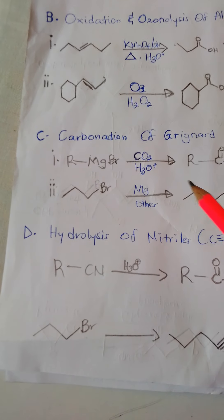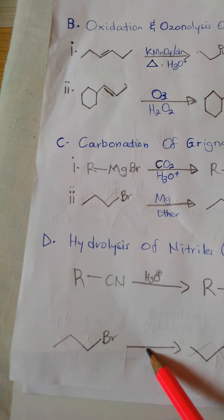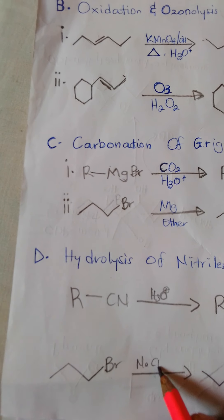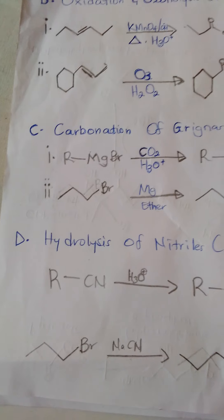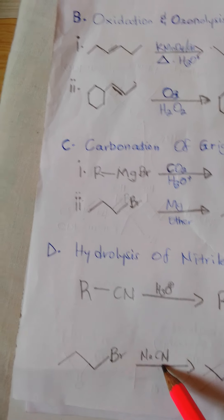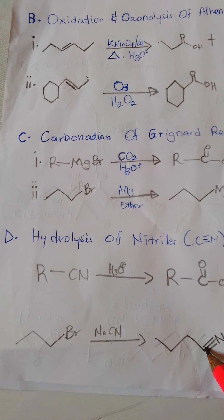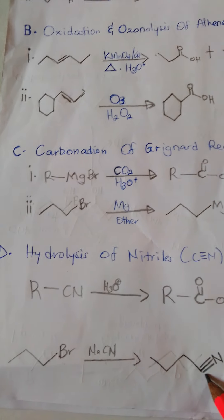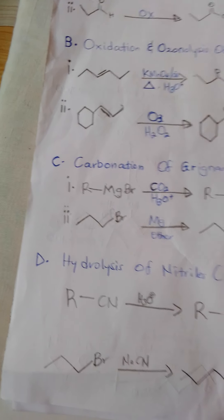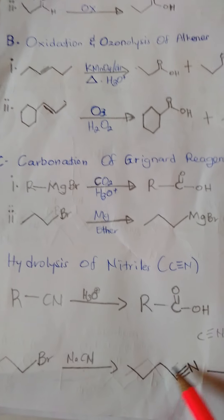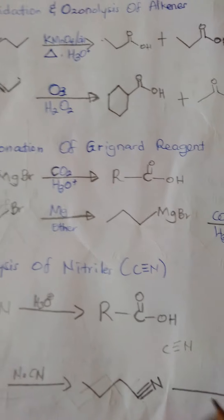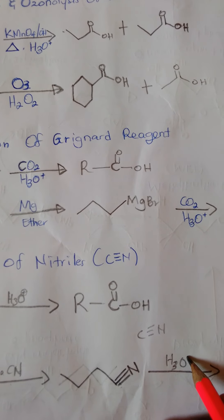Similar to the Grignard approach, if you have an alkyl halide and add sodium cyanide to it, the cyanide group replaces the bromine — or halogen — so you get a nitrile. For example, if you had three carbons in the alkyl halide, you now get four carbons because the cyanide carbon is added. When you then add acid hydrolysis to this nitrile, you eliminate the nitrogen and introduce the carboxylic acid functionality.